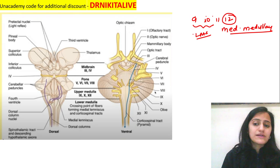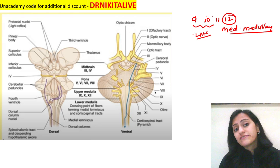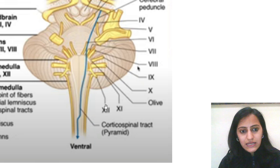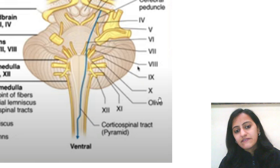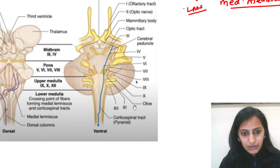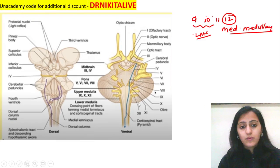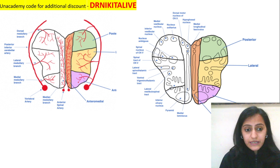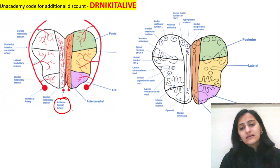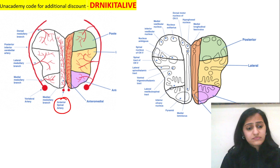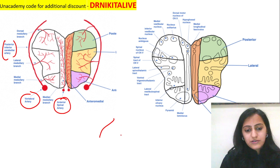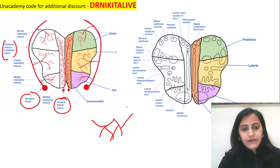In the medial medullary syndrome we will see cranial nerve 12 involved. In the lateral medullary syndrome, that is Wallenberg syndrome, cranial nerves 9, 10, and 11 are involved — and importantly, cranial nerve 12 is not involved. Look at the image: from the medulla, the medial one is cranial nerve 12, and cranial nerves 9, 10, 11 are located laterally. For arterial supply: anterior spinal artery supplies the medial medullary, and the vertebral artery or its branch PICA supplies the lateral medullary.